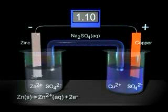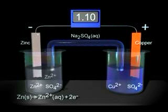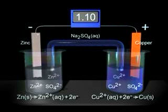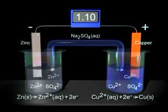As the cell reaction proceeds, zinc atoms of the zinc electrode lose electrons and move into the solution as zinc ions. At the same time, copper 2 ions acquire electrons at the copper electrode and form copper metal.